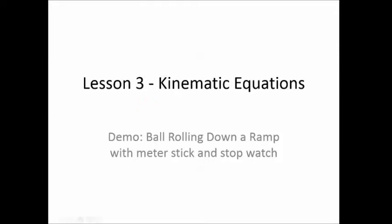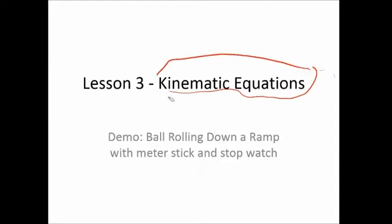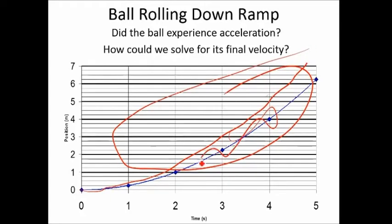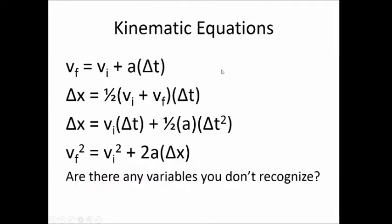Welcome to kinematic equations — probably the most important topic of the year. This is a set of about five equations we need to figure out how to use correctly. For example, if we roll a bowling ball down a ramp, it starts slow and gets faster and faster. How do we figure out what's happening at four seconds if we only know what's happening at one second? That's our goal.